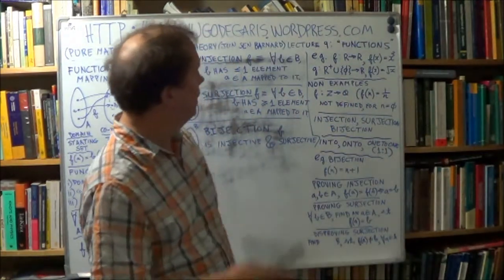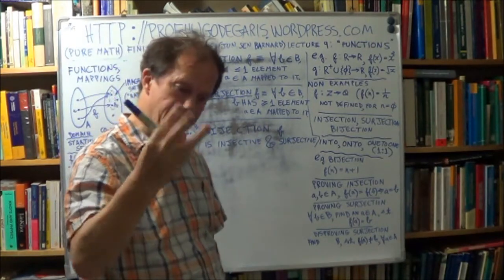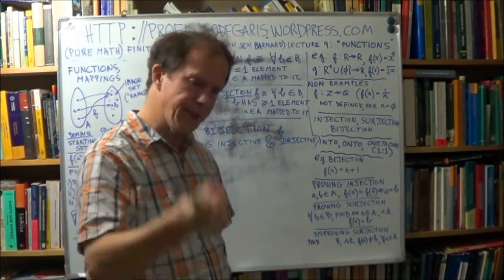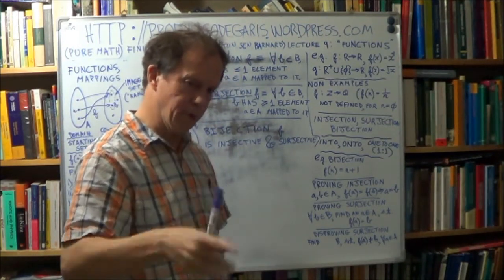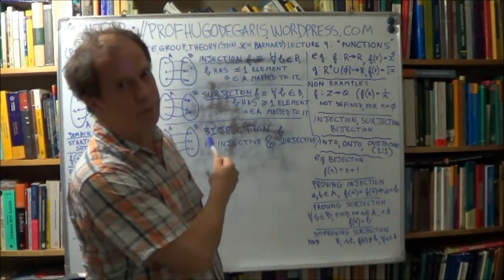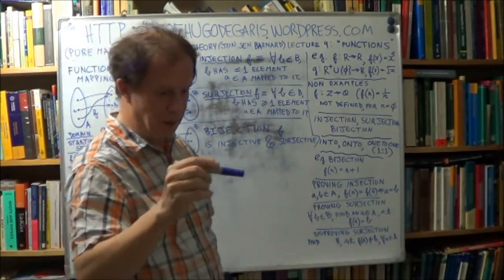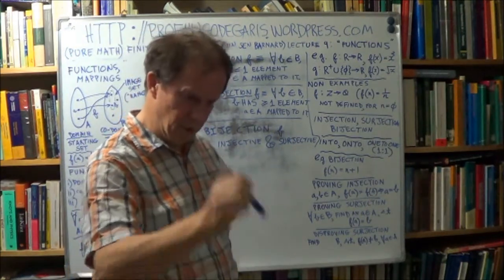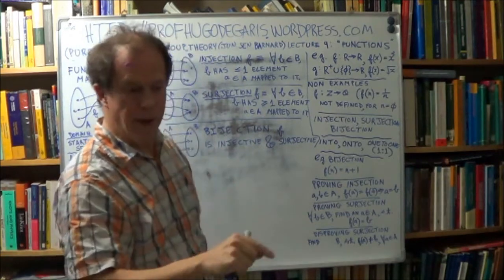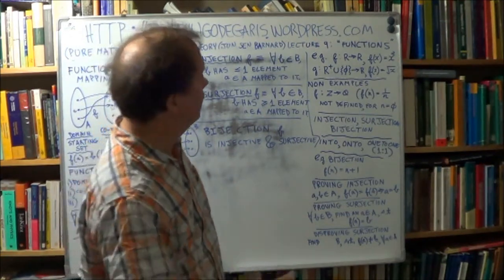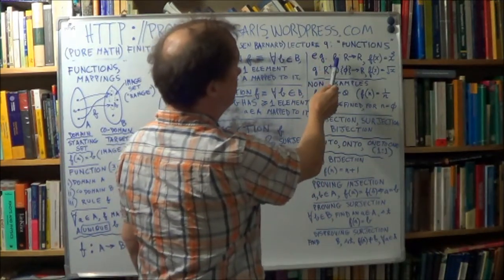Now, let's do a couple of examples. So now that we know what a function is, with its three main parts, starting set, the target set, and a function. Or if you want to use the more formal terminology that's used by Barnard in his book, you have a domain, you have a domain set, and a co-domain that you map to, and a function F. So let's do some examples.